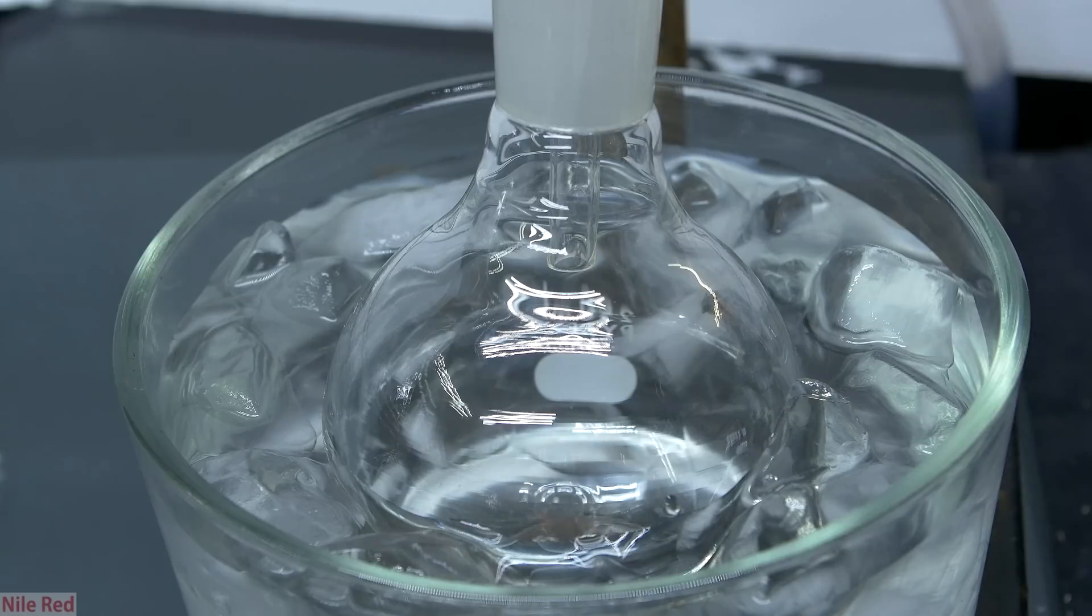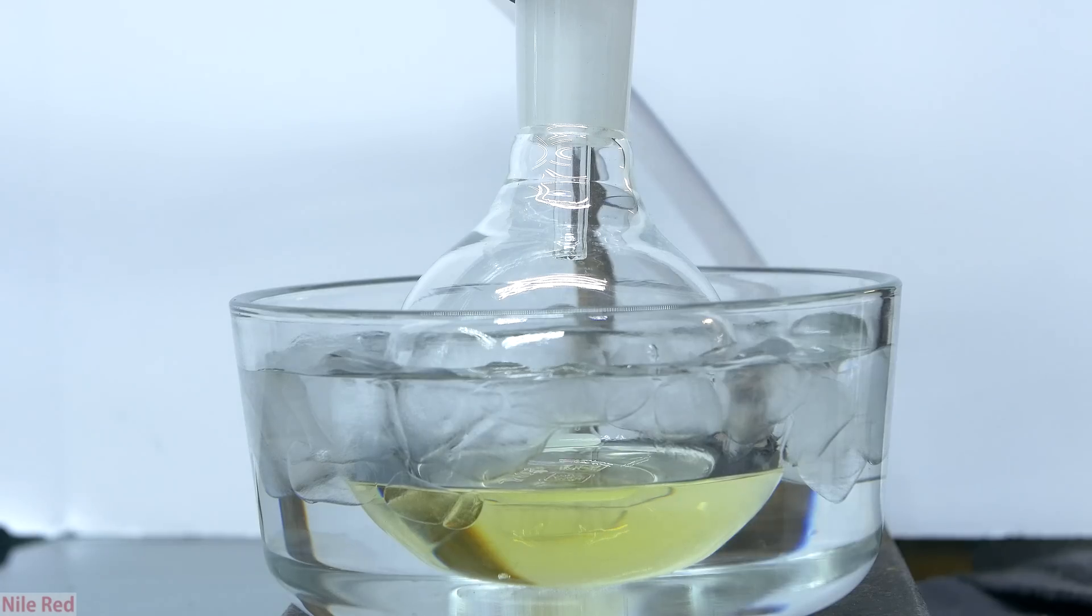When we look over at the receiving flask, we can see a very faintly yellow liquid coming over, and this is our methyl iodide which is contaminated with a little bit of iodine. You'll notice that the receiving flask is well cooled with an ice bath, and this is to limit the evaporation of the methyl iodide because it does have a pretty decently high vapor pressure.